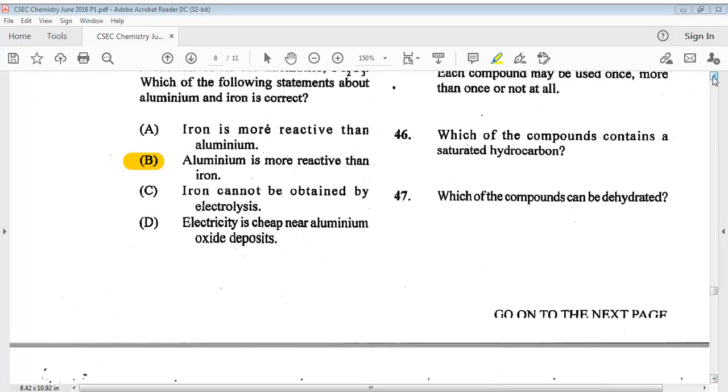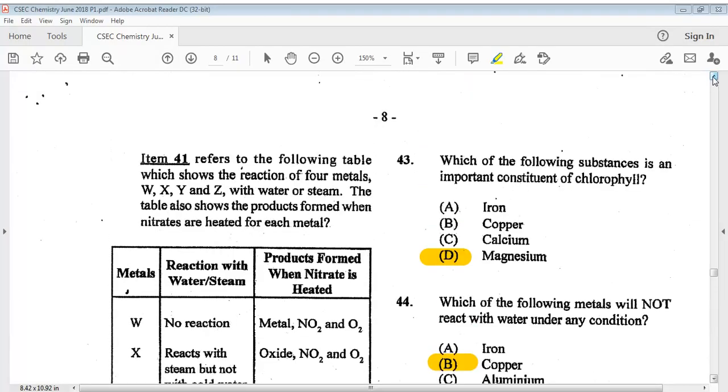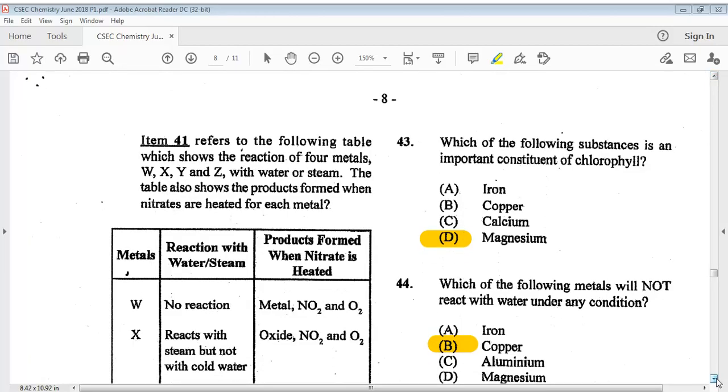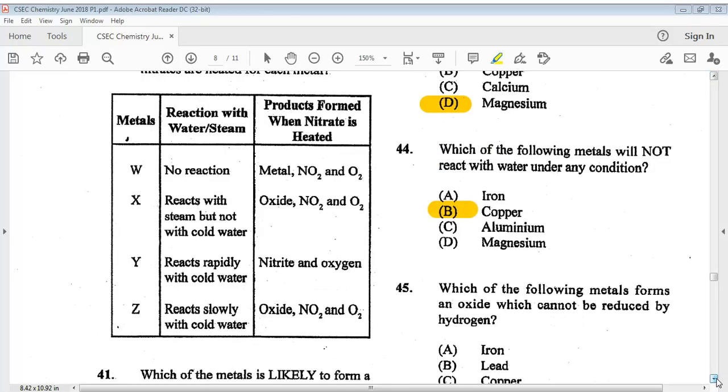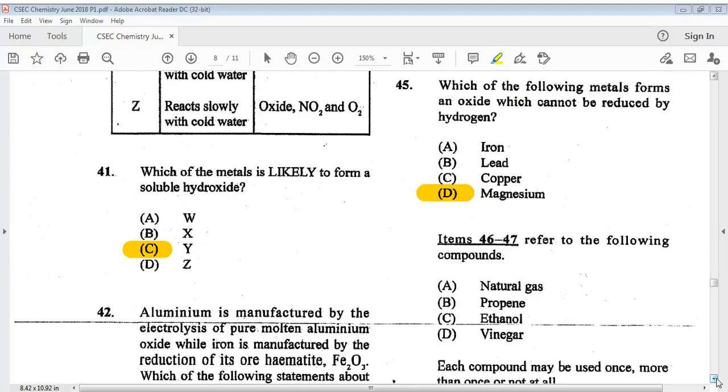Let's go on to number forty-three. Which of the following substances is an important constituent of chlorophyll? The answer is D, magnesium. Question forty-four: which of the following metals will not react with water under any conditions? The answer is B, copper. Question forty-five: which of the following metals forms an oxide which cannot be reduced by hydrogen? The answer is D, magnesium.